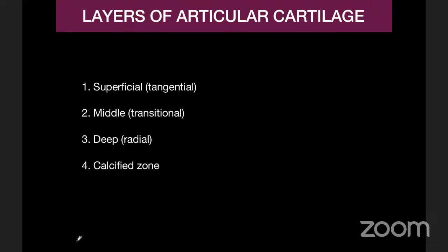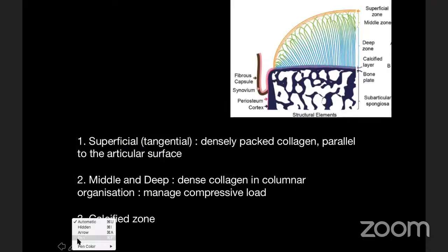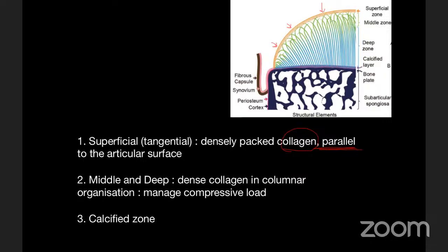There are four layers in articular cartilage: superficial, middle, deep, and a calcified zone. The superficial layer has collagen fibers arranged parallel to the articular surface, acting as a protective covering. Because they are parallel and well-organized, this zone appears relatively dark on most sequences. The middle and deep zones have fibers arranged perpendicular to the articular surface in a columnar fashion. The deeper fibers are closely knit and organized, while the middle zone has slightly more divergent, looser architecture.